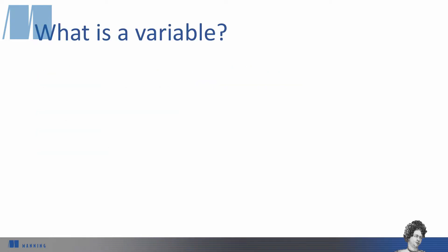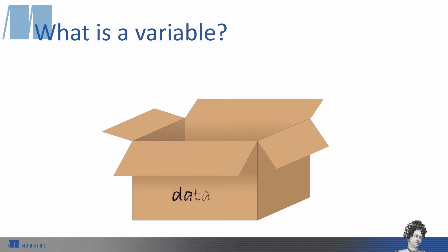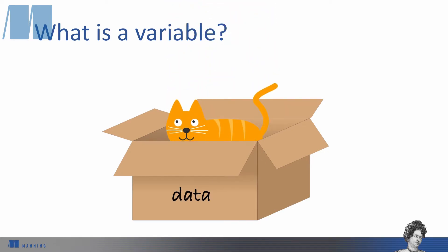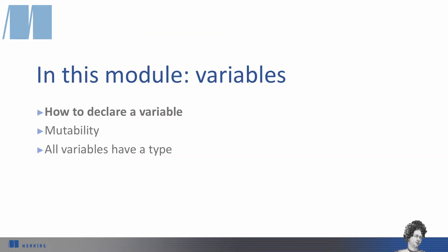You're probably familiar with variables from other programming languages. To review, a variable is like a cardboard box that you can label and put data into for use later. Then we write code that operates on the variable name and doesn't need to know what's actually in the box until the program is running.